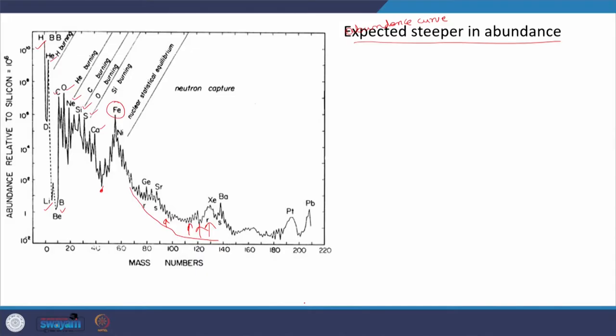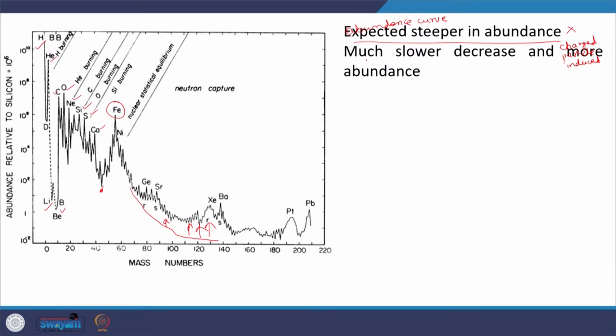The expected steepness in the abundance curve is not observed based on charged particle induced reactions. If charged particle induced reactions were the reason for the formation of elements beyond iron, then the steepness expected was not observed experimentally. Instead, the observation was a much slower decrease — and more abundance — even the abundance data after the iron peak is more than expected if it were due to charged particle induced reactions.